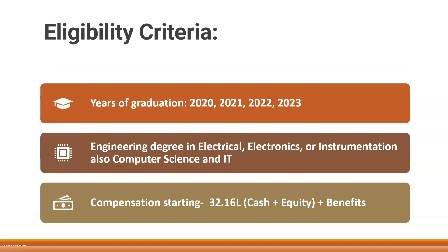They are mainly focusing on pass-outs from 2020, 2021, 2022, and 2023. There are fresher openings and internship opportunities available — even 2024 batch students can try for internships. They mainly focus on engineering degrees in electrical, electronics, and instrumentation. There is also a huge scope for computer science and IT branches. The salary being offered is roughly 32.16 LPA — around 30-plus lakh per annum — because it is a highly paying product-based core electronics company, though the figure can vary based on the role.